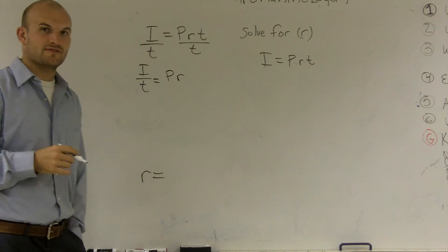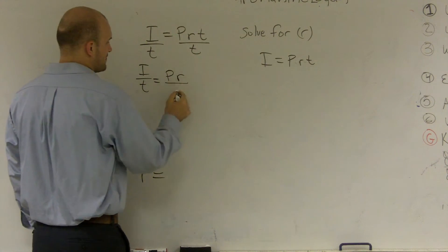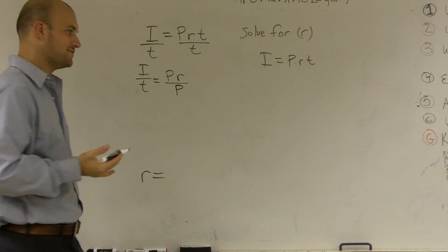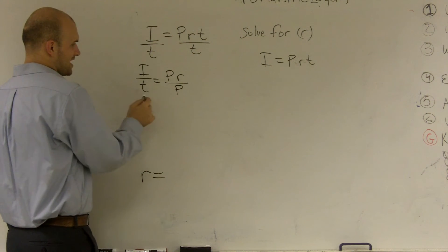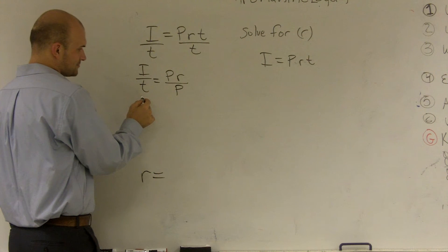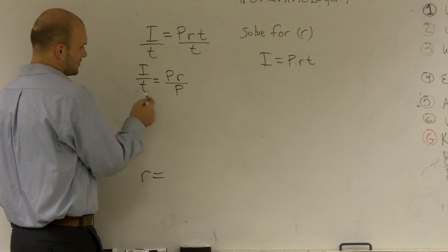And then to undo division by p, you're going to want to divide by p. And this is where it kind of gets confusing on this because you're not, well...